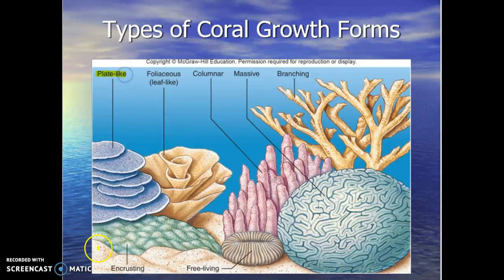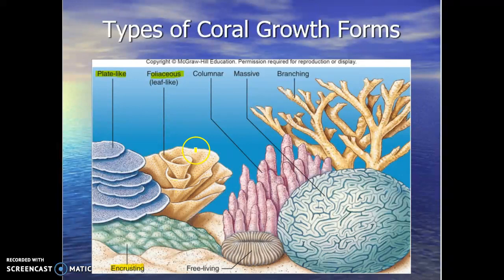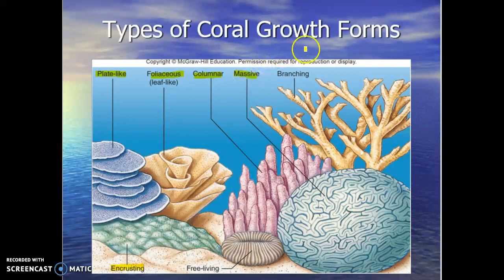Some corals are encrusting — they just grow over and encrust and embed themselves on the reef. Then you have what they call foliaceous, which look like leaves — kind of a spiral, leaf-like, almost lettuce-like pattern. Columnar forms are big tall columns. The massive growth forms — those are your boulder corals and brain corals — can get as big as small cars. And then the branching forms: your elk horn, your staghorn — they grow up and branch out.